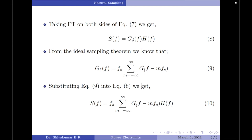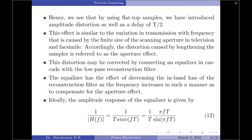The next obvious thing we would like to do is eliminate H(f) from the equation of the sampled signal. This distortion may be corrected by connecting an equalizer in cascade with the low pass reconstruction filter at the receiver. The equalizer should have the effect of decreasing the in-band loss of the reconstruction filter as the frequency increases, in such a manner as to compensate for the overall effect of the flat top sampling process. The amplitude response of the equalizer should be 1 divided by the magnitude of H(f).